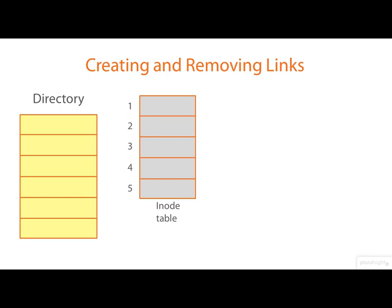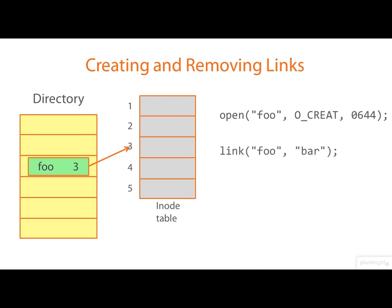To be clear about linking: we've created a file and given it a link called foo. We then create an additional link to the file called bar. These two links are of exactly equal status — it's not a question of there being a master link and a subsidiary link. There are no timestamps kept on the links themselves; the timestamps are in the inodes and are associated with the file. So foo and bar are simply two links to the file — the file simply has two names. There's only one file.